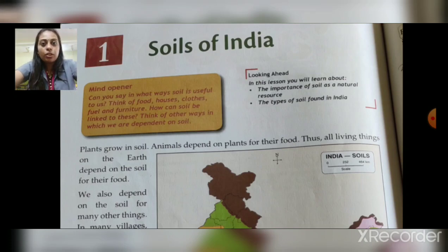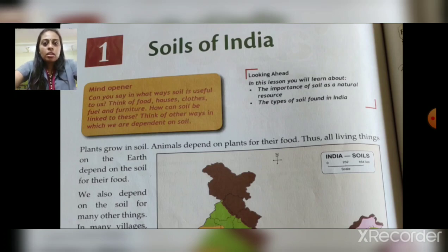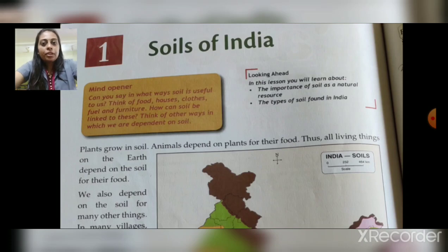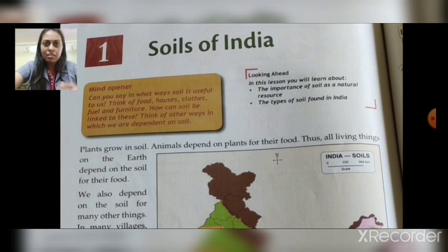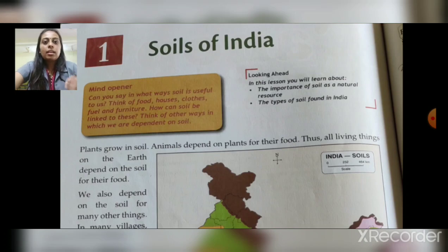For houses, we need a lot of wood. From where are we getting it? From trees and plants, which grow in the soil. Our clothes come from natural fibers like cotton, which we get from the cotton plant — and the cotton plant grows in the soil. If we talk about fuel, petrol and diesel — all this petroleum we get from deep inside the earth's crust. For furniture and construction work, wood is used, which we also get from the soil.